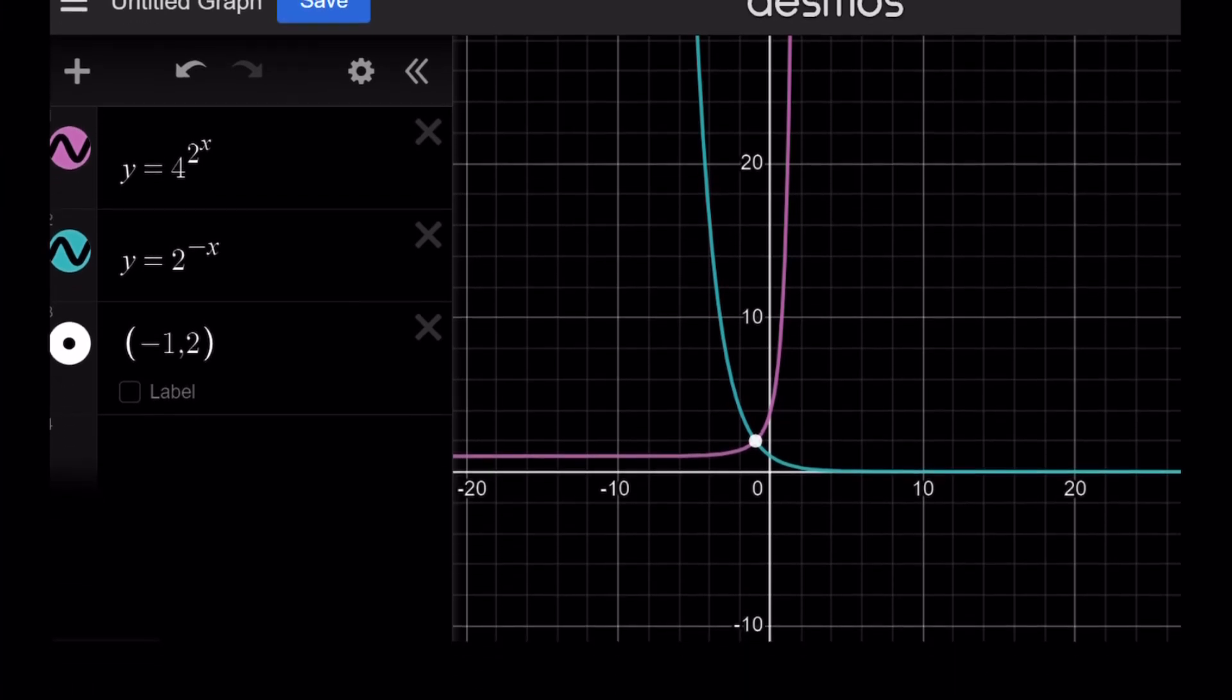So the graph of these two functions, y equals 4 to the power 2 to the power x and 2 to the power negative x. By the way, I'm not looking at the 2 to the x plus 1 and negative x here. I'm looking at two different functions, but it doesn't matter. This is still increasing and this is still decreasing and they intersect at negative 1 comma 2.